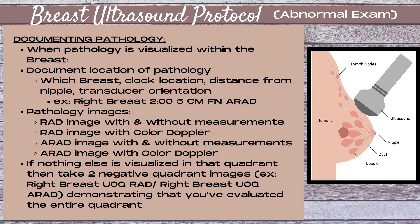Note that the measuring process is exactly the same as for a lymph node. It doesn't matter if you do two measurements in radial and one in antiradial, or two in antiradial and one in radial — follow the protocols of your specific site. What's most important is that you ensure you're doing the three correct measurements: a length, which is a horizontal measurement; a height, which is a vertical measurement; and a width, which is also a horizontal measurement.